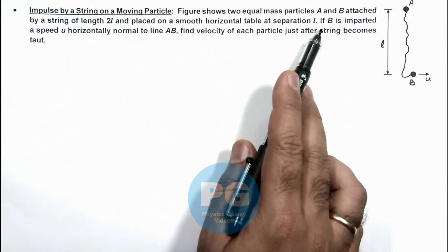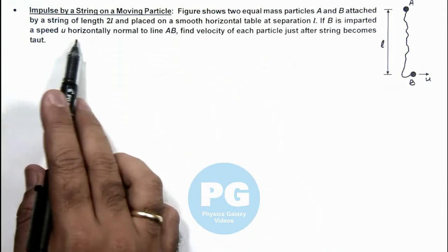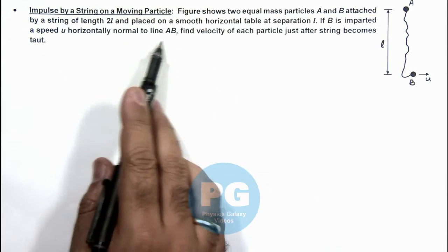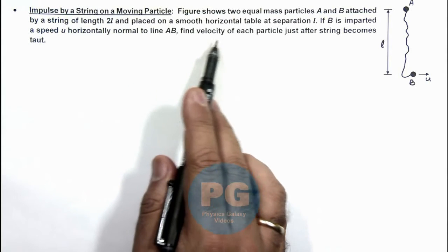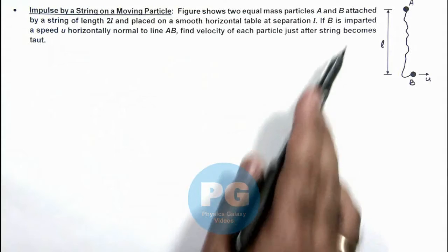Here it is saying if B is imparted a speed u horizontally normal to line AB, then we are required to find the velocity of each particle just after string becomes taut.